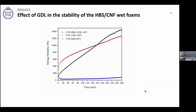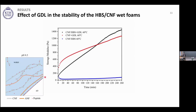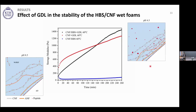GDL also plays a role. Time-sweep measurements of storage modulus over time with and without GDL showed that without GDL there was no improvement in mechanical properties, but with GDL there was significant improvement over time. Without GDL at pH 8.5, CNFs, ANFs, and peptides are all negatively charged and form a loose structure around the air bubbles. Adding GDL gradually decreases pH to 4.5, screening CNF charges so they come closer together. At this pH, ANFs become positively charged, enabling interaction between CNFs and ANFs and improving the elastic modulus.